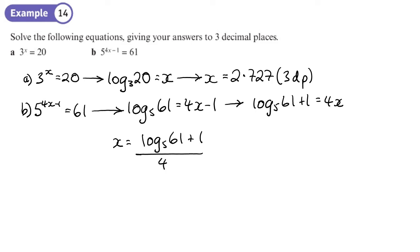Okay so we can do that all on our calculator and see what it gives us. So I'll press the fraction button log base 5, 61. Now outside of the brackets I put plus 1 not inside the bracket divide by 4 and I get 0.8889 so to three decimal places that's going to be 0.889.